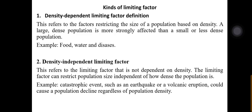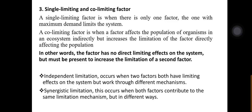The third kind is the single limiting or co-limiting factor. A single limiting factor occurs when there is only one factor, and the one with maximum demand limits the system — for example, if water is abundant but food is scarce, food becomes the single limiting factor. The co-limiting factor is when a factor affects the population indirectly but increases the limitation of a factor directly affecting the population, like how fuel scarcity affects food prices and transportation costs.